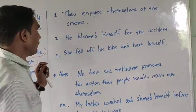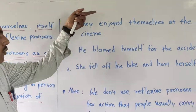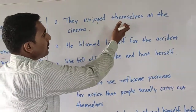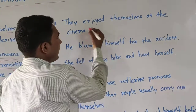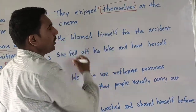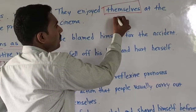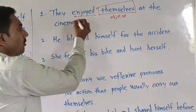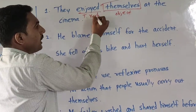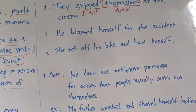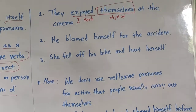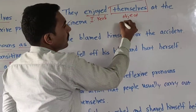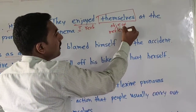Now, look here. For example, how we can use reflexive pronouns as an object. They enjoyed themselves at the cinema. In this example, 'themselves' is used as an object. 'Enjoy' is a transitive verb, and 'themselves' is a reflexive pronoun.